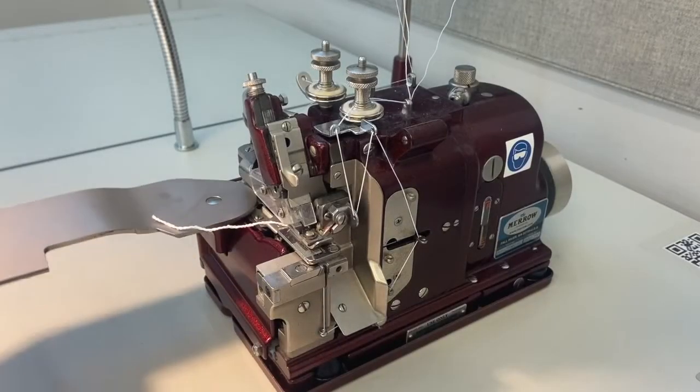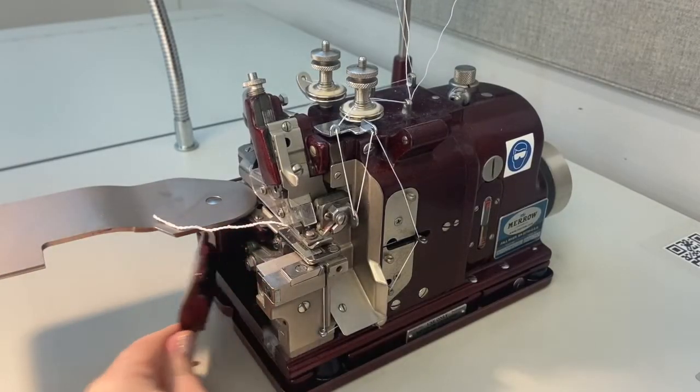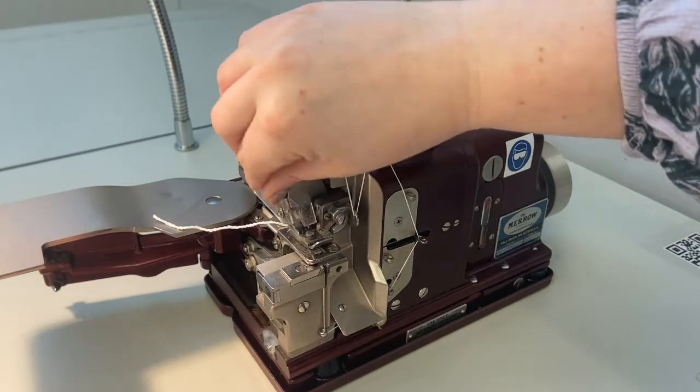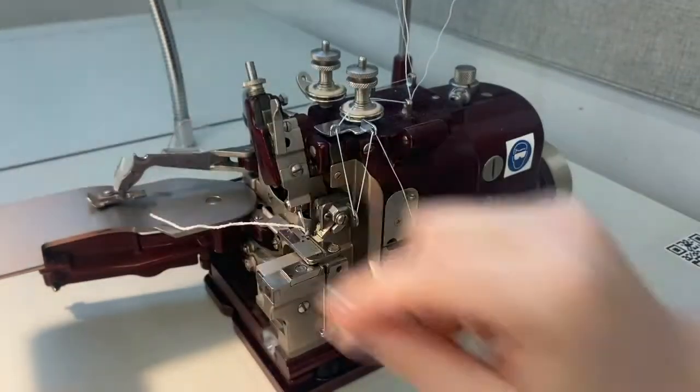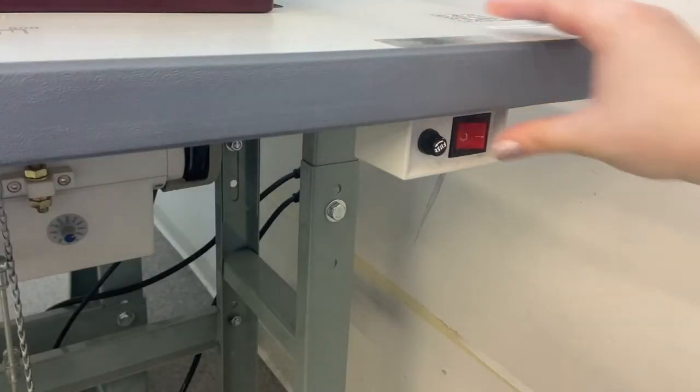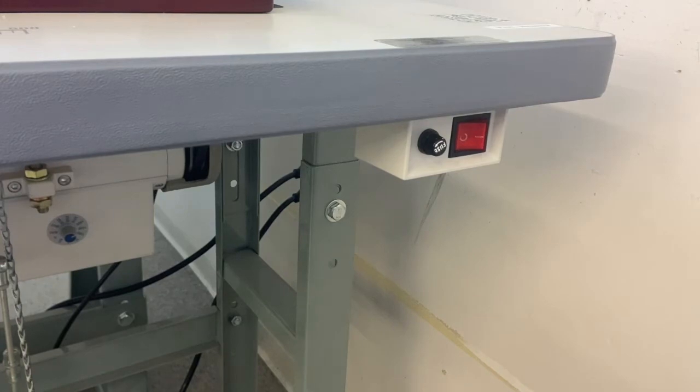To thread the lower looper, slide open the top plate, open the side door to view the inside of the machine, and raise the lever to release and swing open the presser foot. This way we have a clear view of the needles. Just like the overlock machine, this machine has an active blade, so always thread the machine with the power turned off.